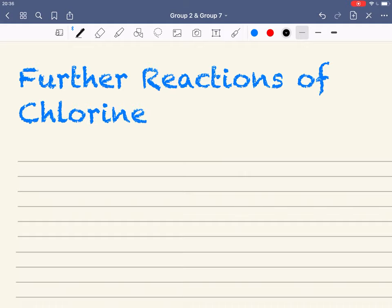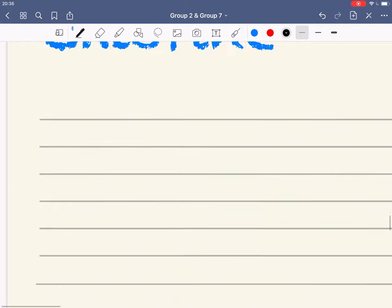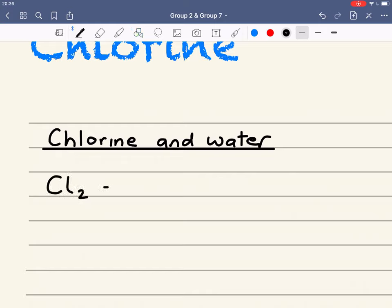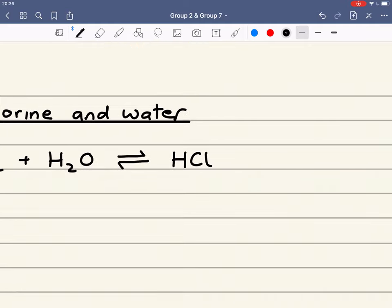Here we're going to look at some further reactions of chlorine. The first one is the reaction of chlorine with water. In chlorine reacted with water, we get an equilibrium mixture set up.